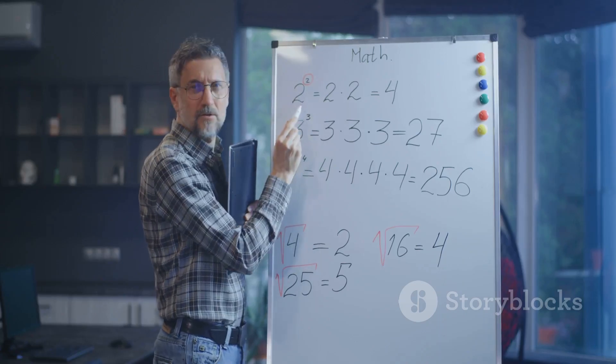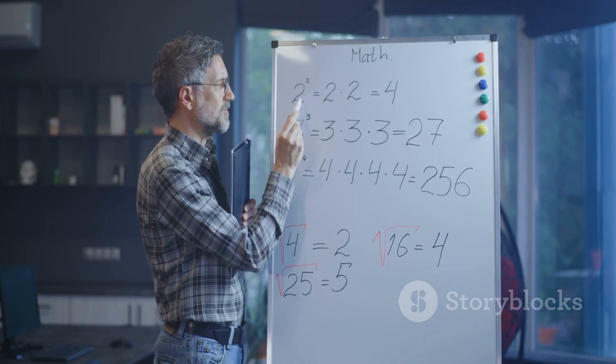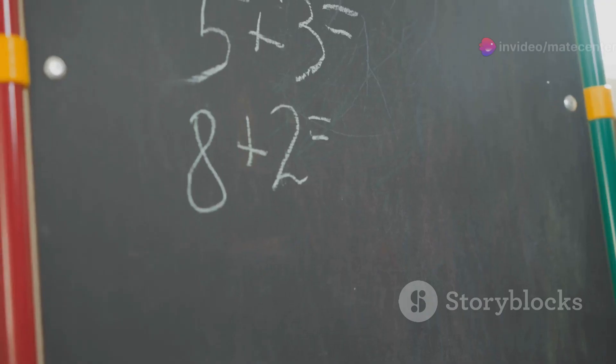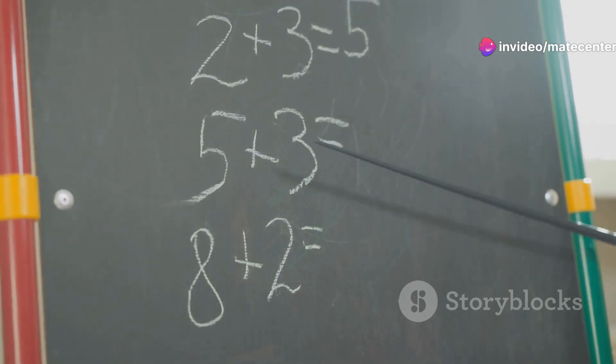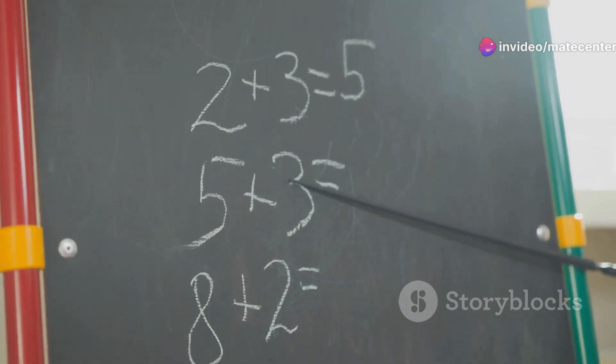A decimal is a way to represent a part of a whole when that whole is divided into ten, or a hundred, or a thousand, and so on. It's like a more precise fraction.